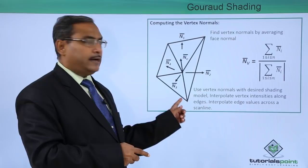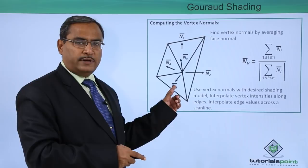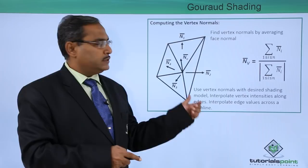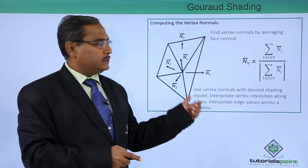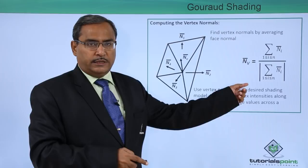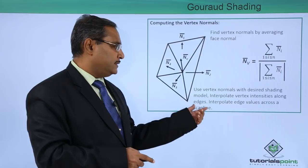Now, computing the vertex normals. Here we have one diagram showing multiple different polygons, each with its own normal. From these polygon face normals, we calculate the normal for each vertex. We find vertex normals by averaging the face normals using the respective equation. Then we use vertex normals with the desired shading model, interpolate vertex intensities along the edges, and interpolate edge values across a scan line.